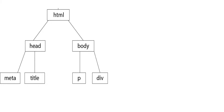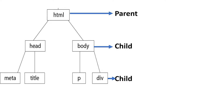This is a basic HTML tree. The tag at the top is the parent tag. Whatever comes after it in vertical sequence will be referred to as children of each other. Inside HTML you see head and body — those are children of HTML. The tags in the third row are children of the second row and grandchildren of the first row.